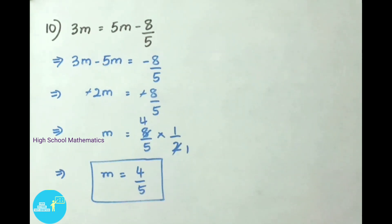See now question number 10. 3m equals 5m minus 8 by 5. That implies plus 5m on transposing becomes minus 5m. So 3m minus 5m equals minus 8 by 5. 3m minus 5m we get answer minus 2m, that equals minus 8 by 5.